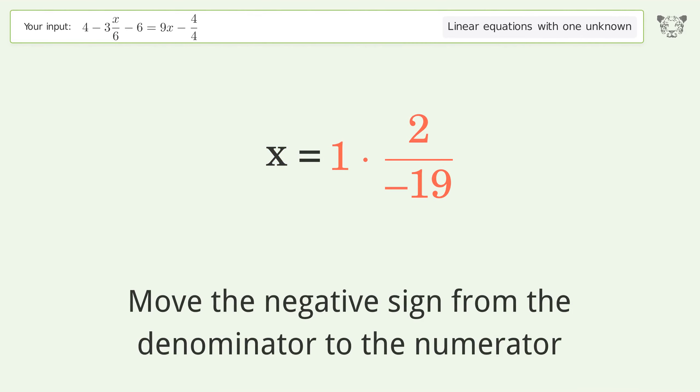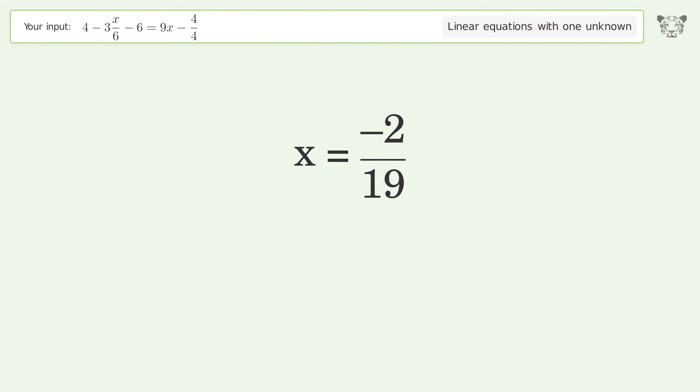And so the final result is x equals negative 2 over 19.